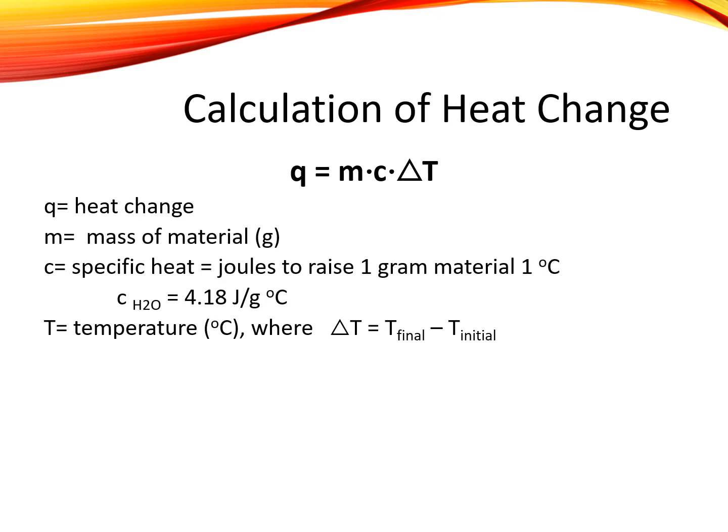To calculate heat change, the equation is q equals mc times delta T. q equals the heat change, m is the mass of the material in grams, c is the specific heat, which is the energy required to raise one gram of the material one degree Celsius. For water, that value is 4.18 joules per gram Celsius. T is the temperature in Celsius, so delta T is the change in temperature, the final minus the initial temperature.